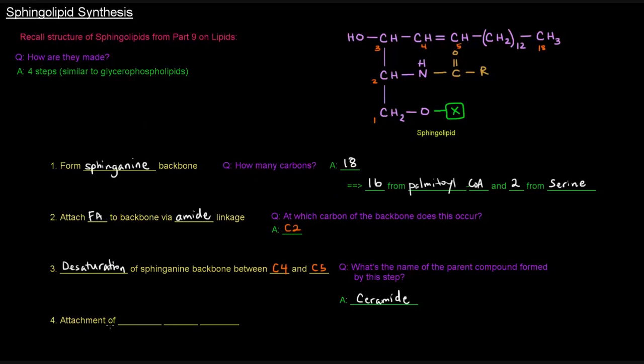After that, the last thing to do is have the attachment of the polar head group, depending on what it is. These first three steps here occur in the smooth ER, and this last one occurs in the Golgi. Let's move on and see these steps.